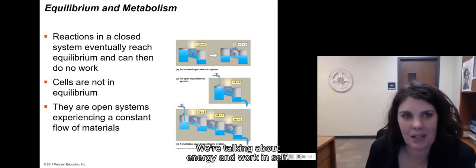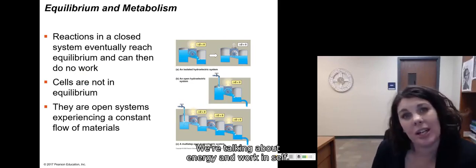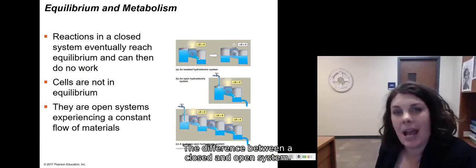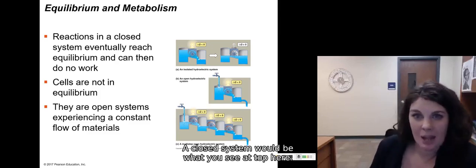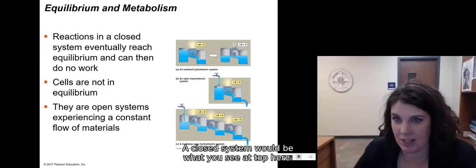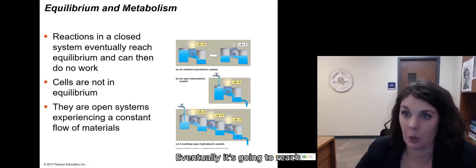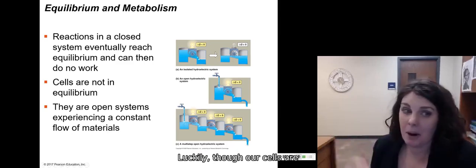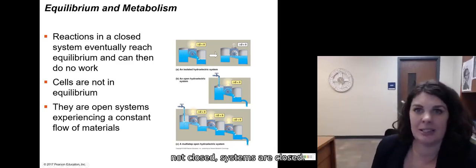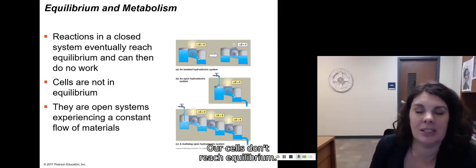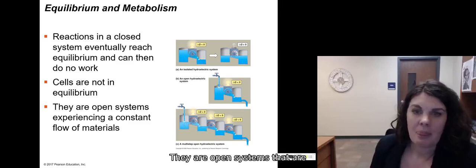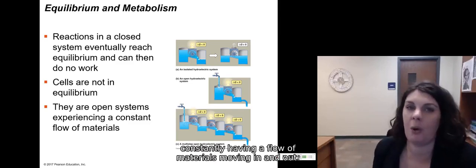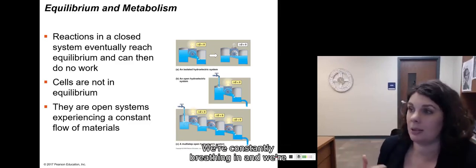Okay, welcome back. So we are talking about energy and work in cells and the difference between a closed and open system. A closed system would be what you see at top here. Eventually it's going to reach equilibrium and no work is going to be able to be done. Luckily though our cells are not closed systems. Our cells don't reach equilibrium. They are open systems that are constantly having a flow of materials moving in and out.